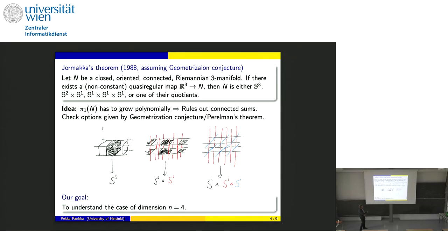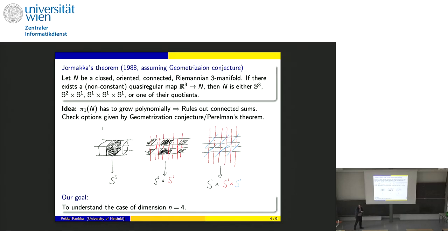The timeline here is kind of funny: the interest in dimension four and these questions actually came from a question of Gromov around 1980–81, where he asked whether there are simply connected manifolds which do not allow a quasi-regular mapping from Rn. Dimension four is the first one where you can ask: is there a four-dimensional manifold such that you cannot wrap it into R4?